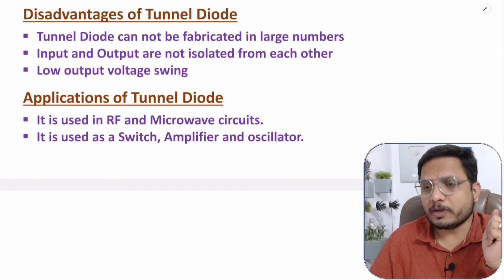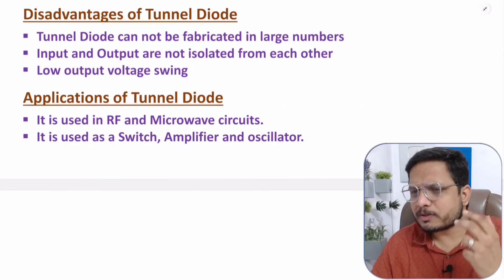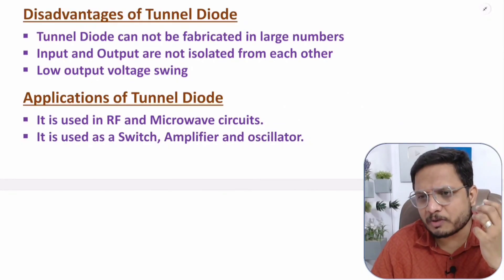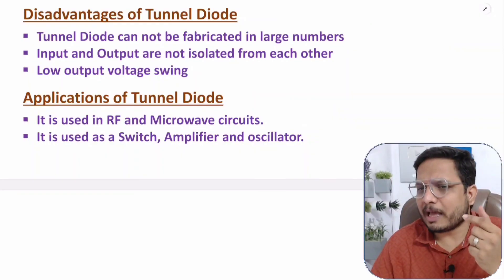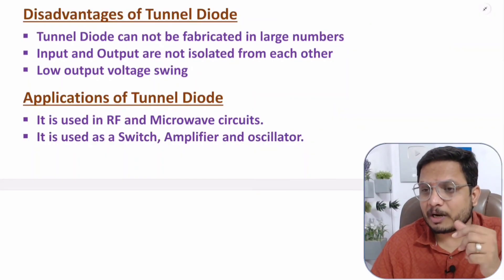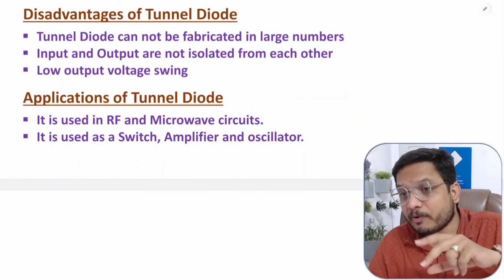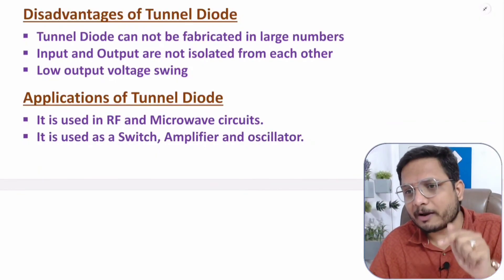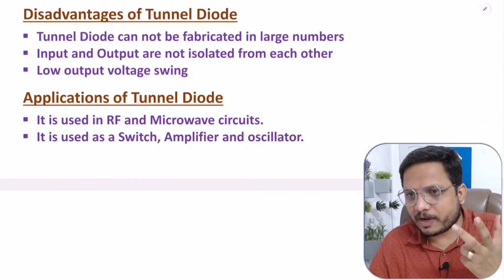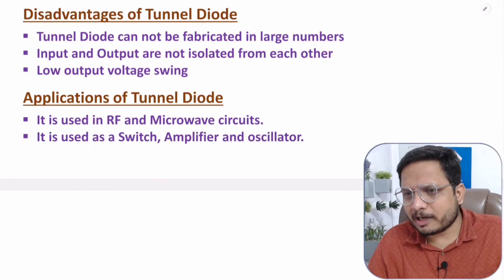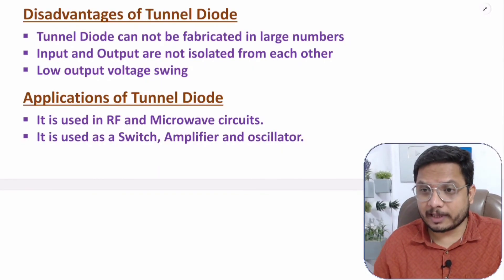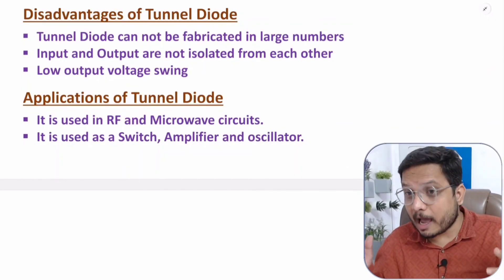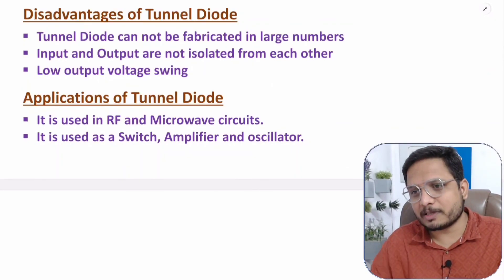Applications of tunnel diode are mainly in RF and microwave circuits. It is used as a switch, amplifier, and oscillator, all at very high frequencies because of its fast switching speed. That concludes the explanation of tunnel diode. If you have any questions please note them in the comment section — thank you for watching.